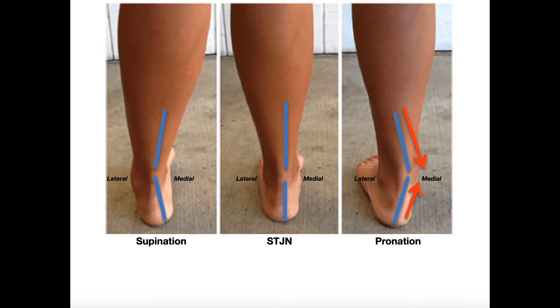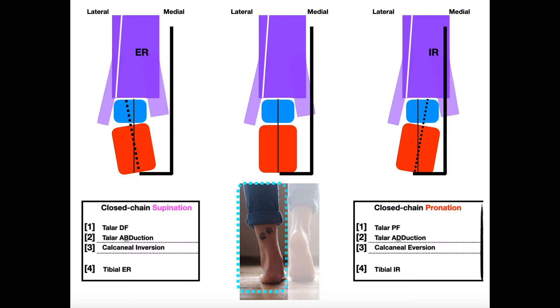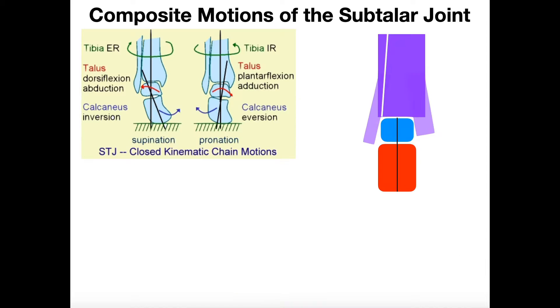This is a topic that's easy to get lost in the weeds. We're going to take it one step at a time. We're going to start really with a surface anatomy approach, and then we're going to get into all the details about how all these bones associated with the ankle joint actually move.